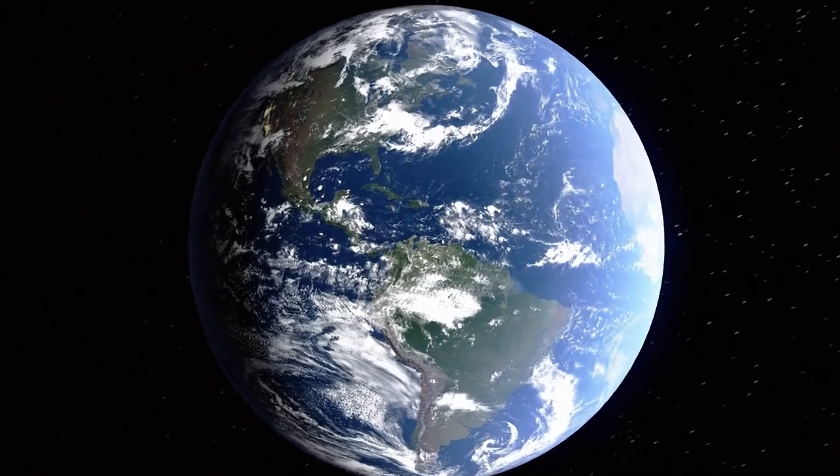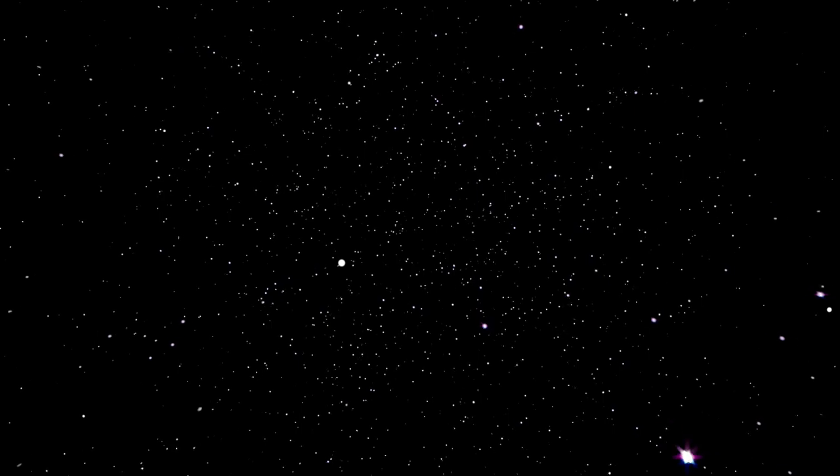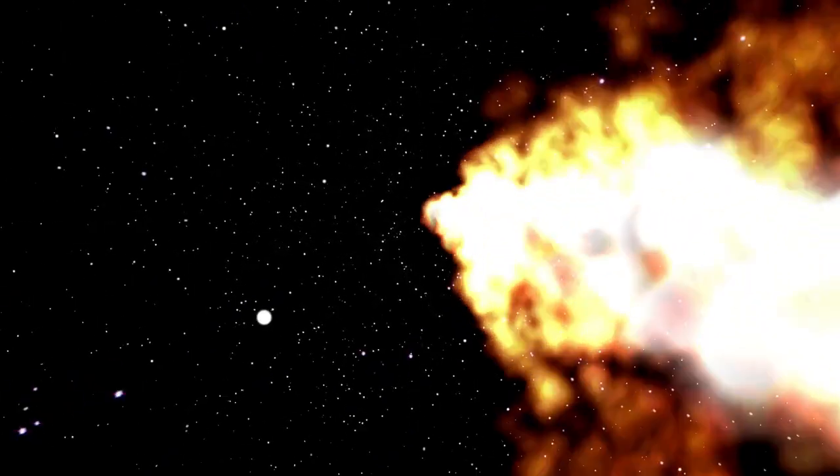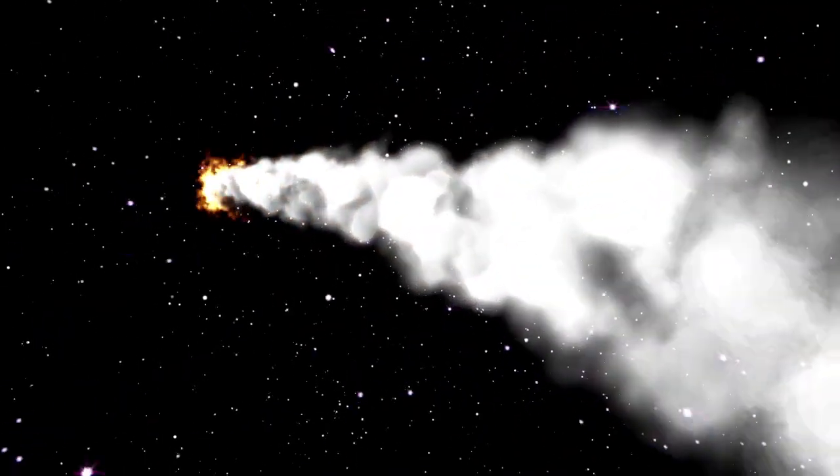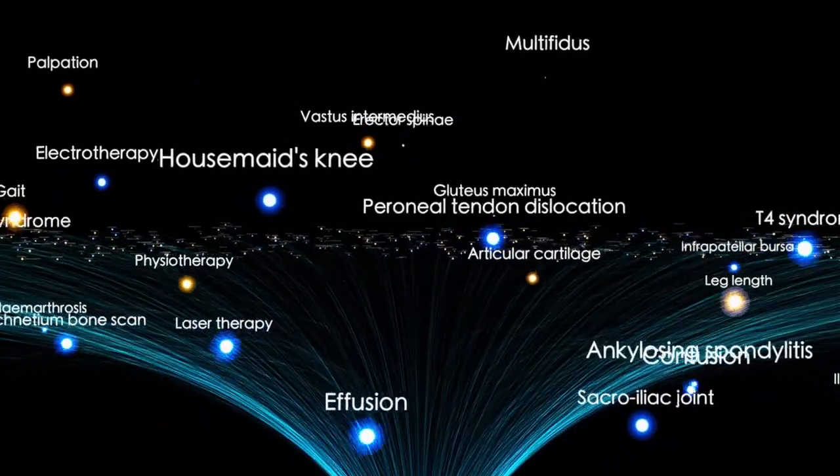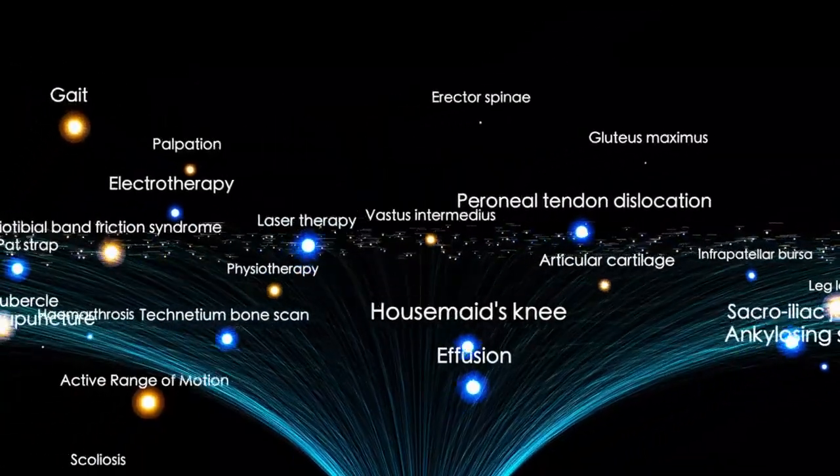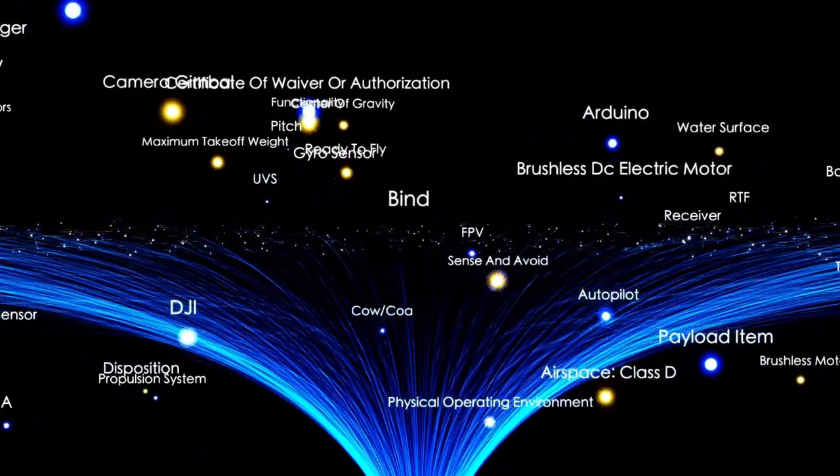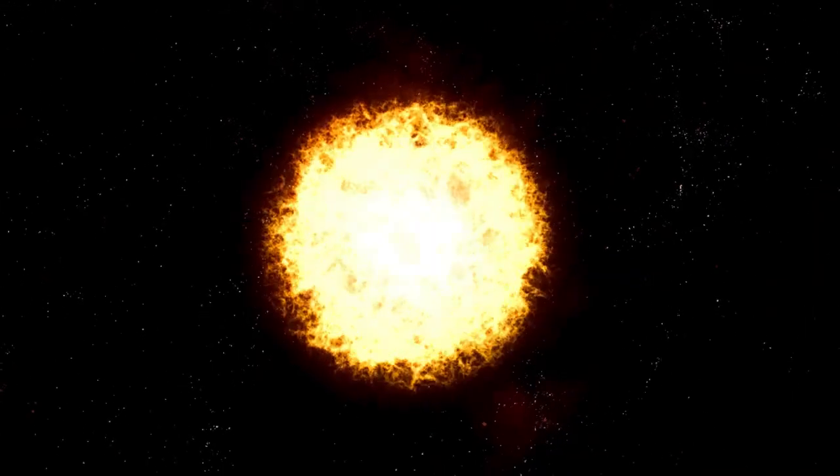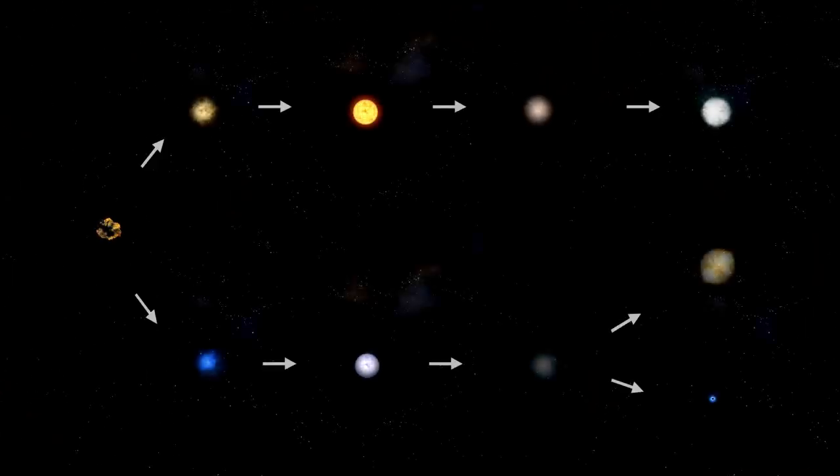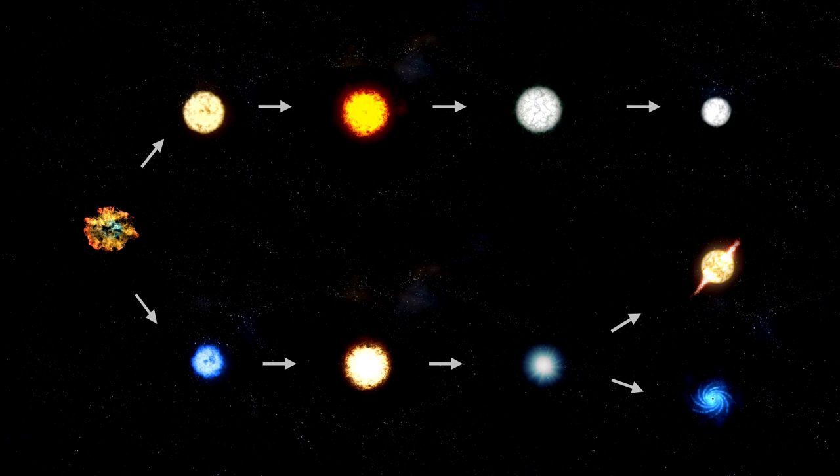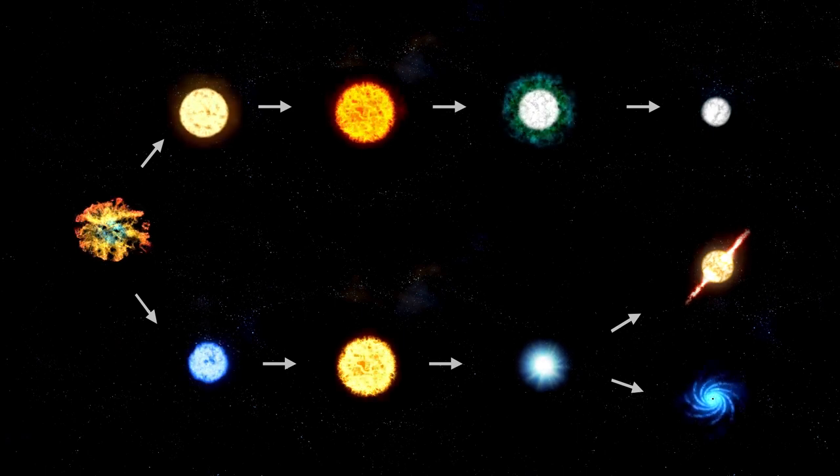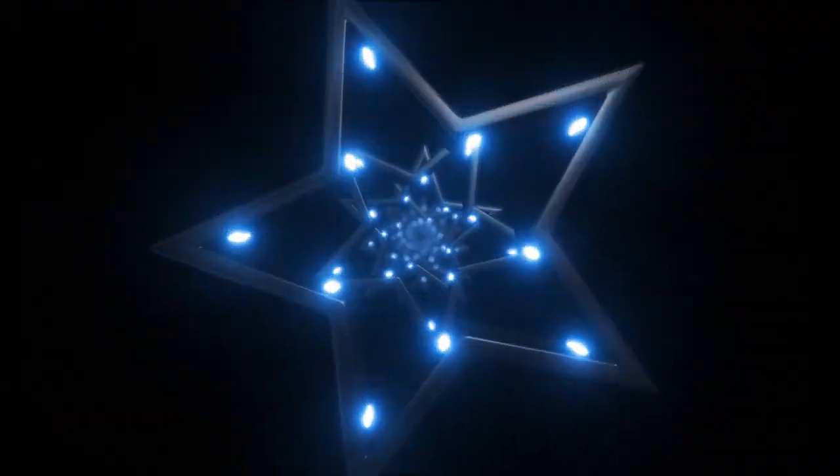Still, it's important to approach this with cautious excitement. The increase in brightness doesn't guarantee an imminent supernova. Red supergiants are infamous for unpredictable behaviour, and this could be another phase in Betelgeuse's long and chaotic life. But the scale of this change, 250% brighter in such a short time, is certainly not ordinary, suggesting that something noteworthy is unfolding inside the star.